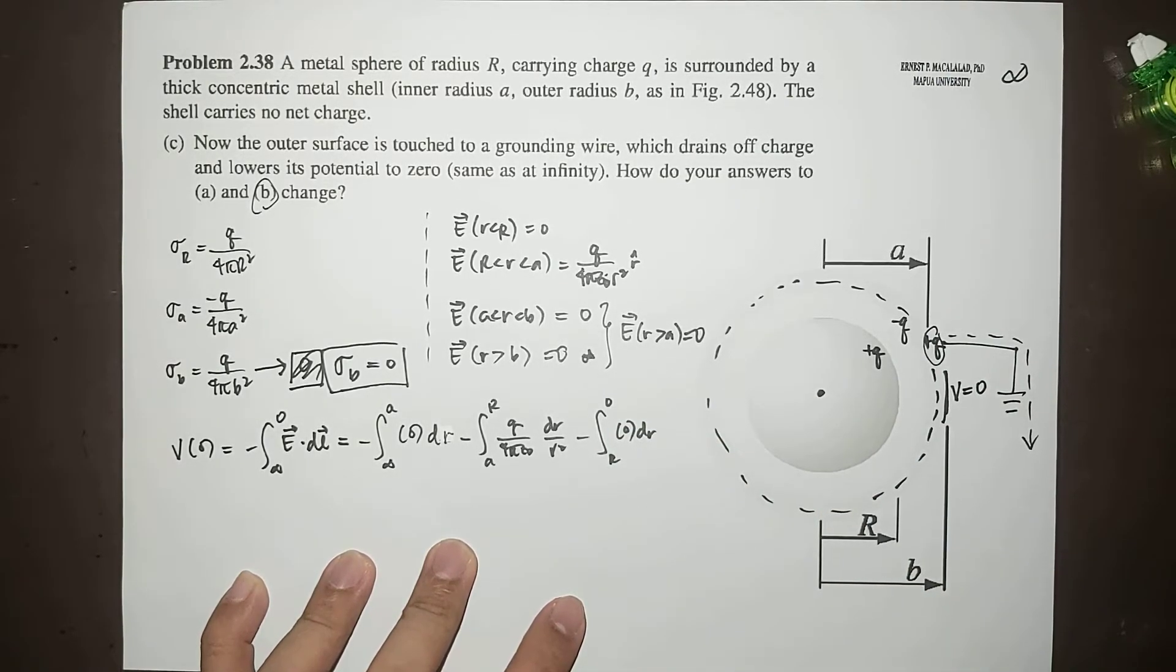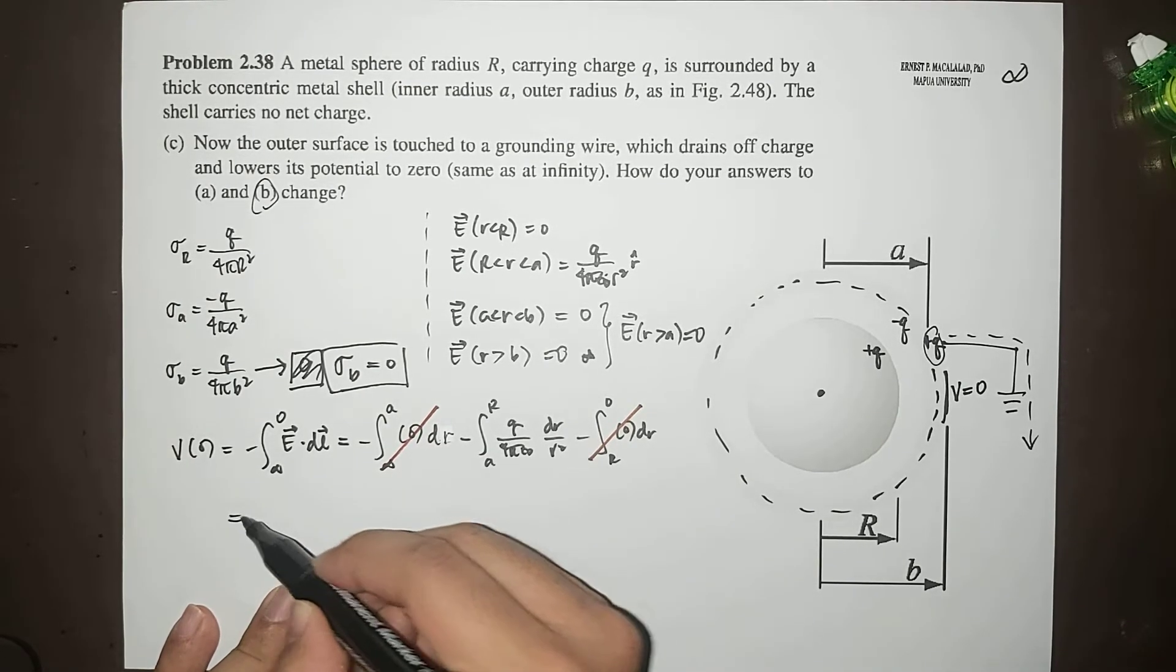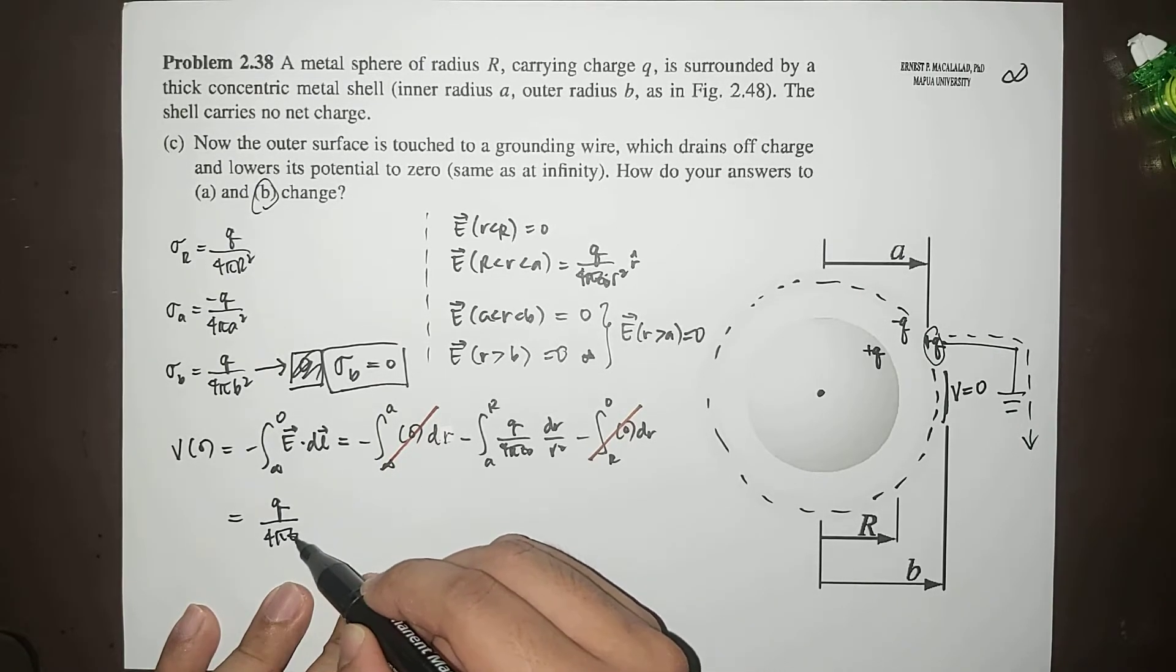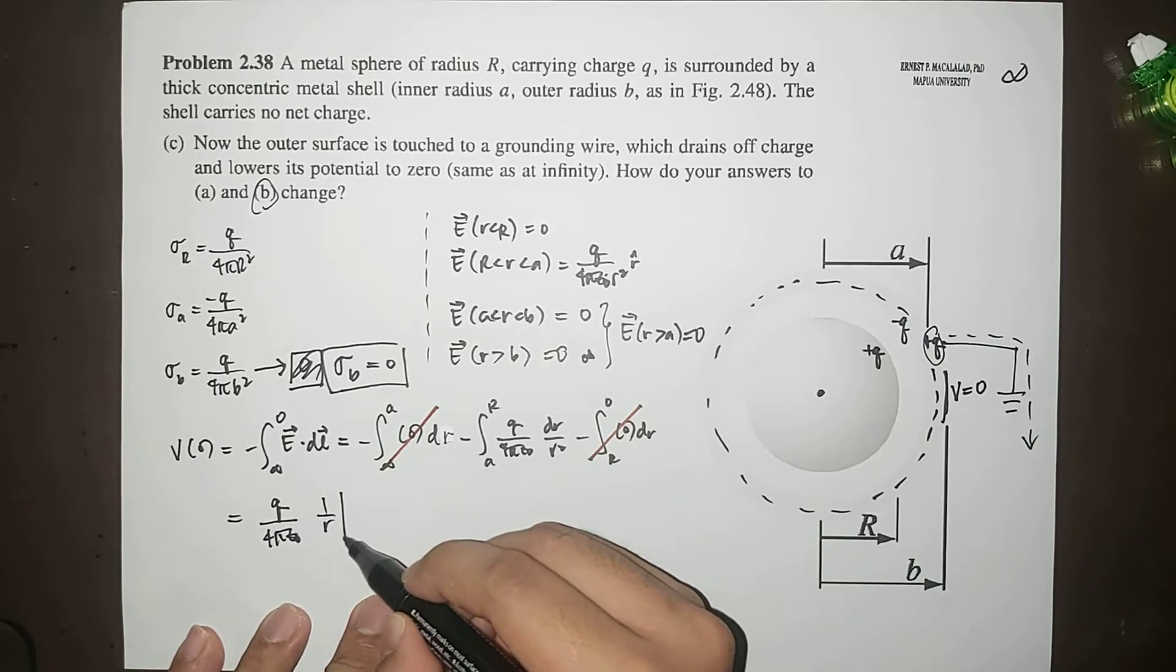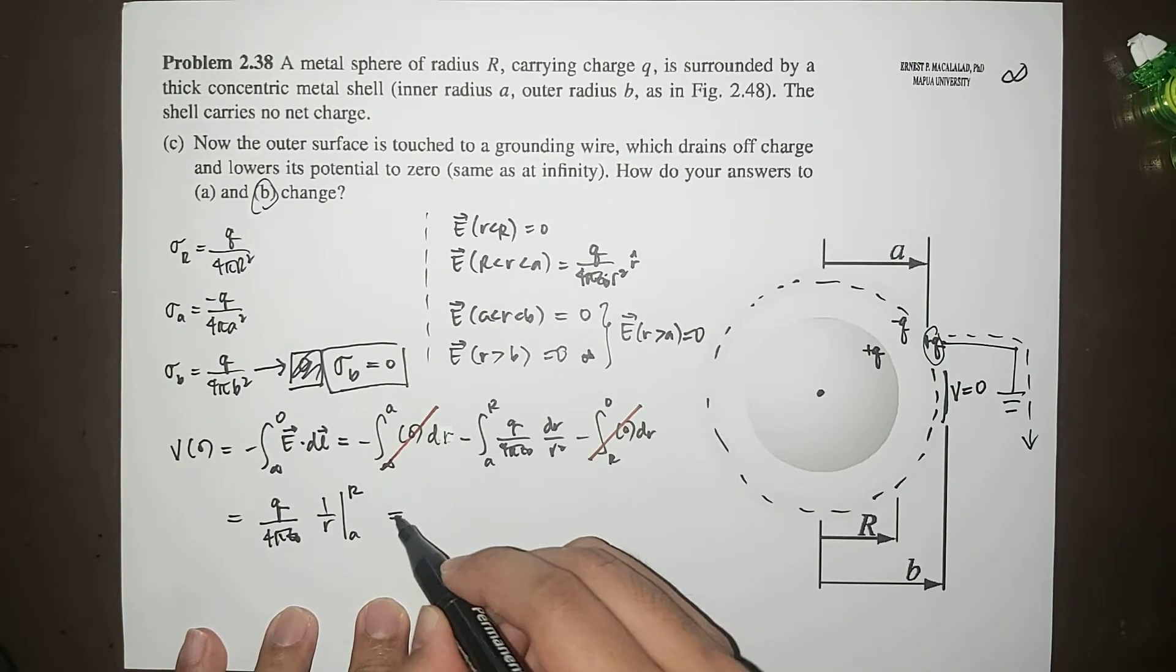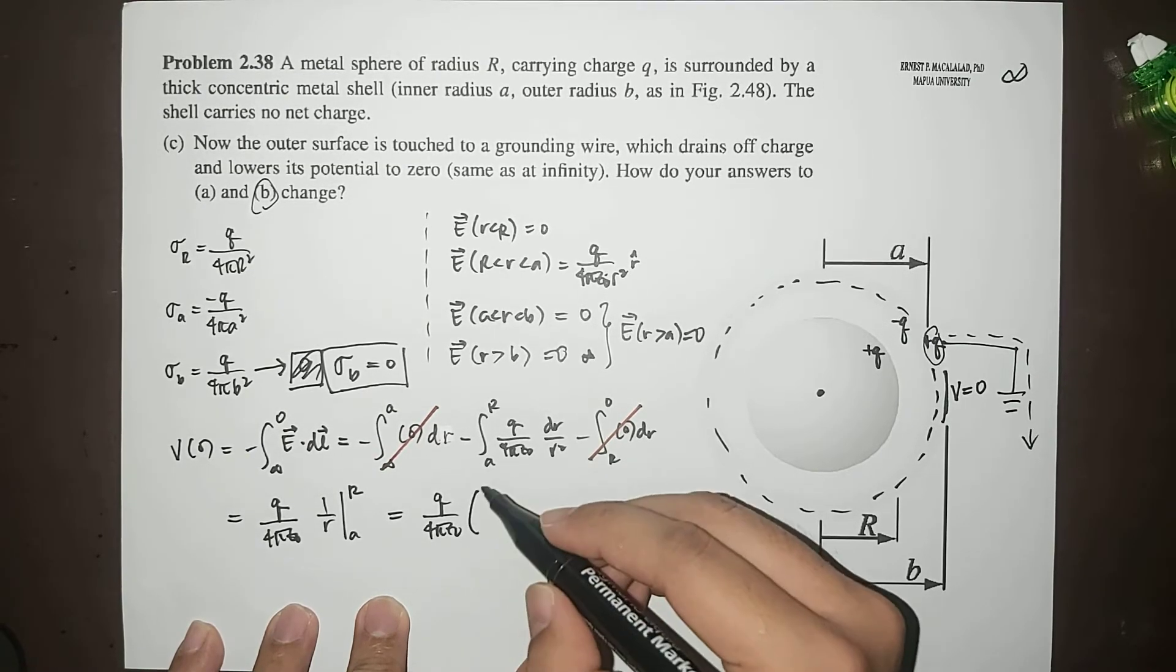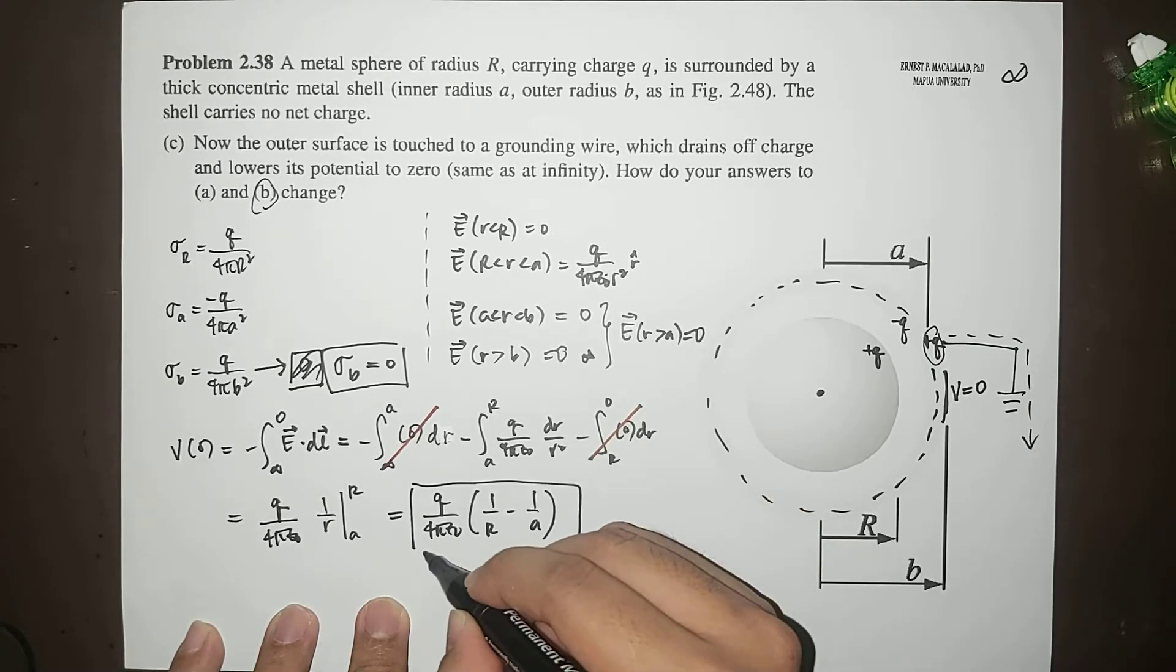So as usual, we can see very clearly that this and this is zero. So therefore this potential will now be equal to Q over 4πε₀ times one over R evaluated from A to R, which is equal to Q over 4πε₀ times one over R minus one over A.